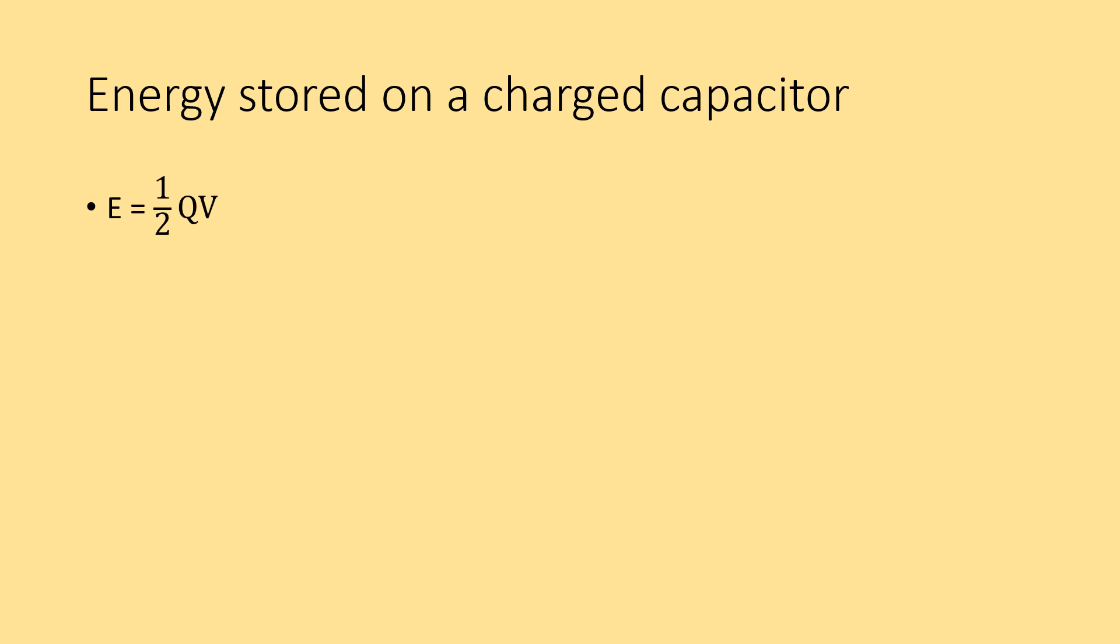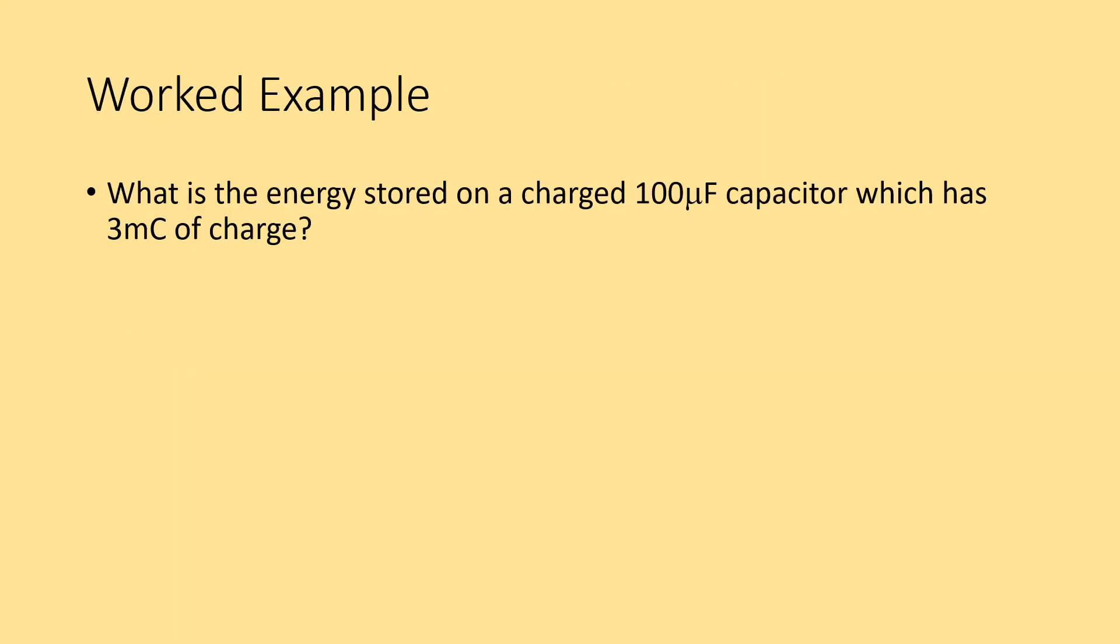Moving on from this, the energy is given as a half charge times voltage, but since we've already discussed that charge is equal to capacitance multiplied by voltage, we can now substitute charge into that equation. If you substitute CV into the equation above, you're going to end up with a half times C times V times V, which is a half CV squared. But also, if you rearrange that equation, potential difference is given as charge divided by capacitance. So, V equals Q over C. If you substitute that back into this equation, you have E equals a half Q times Q divided by C, or a half Q squared divided by C.